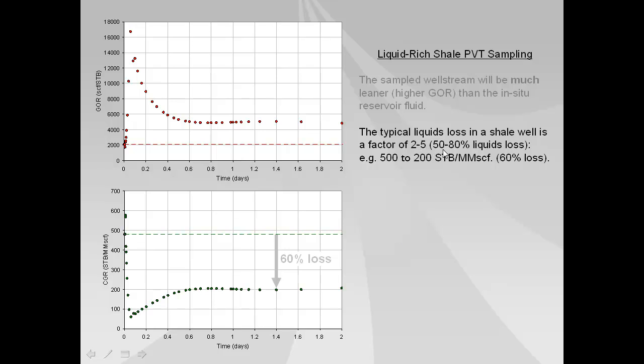Typically 50 to 80 percent of the liquids that would be produced in a normal permeability reservoir with the same initial fluid will only be producing somewhere between 20 and 50 percent of the same oil that would have been produced from a normal permeability reservoir.